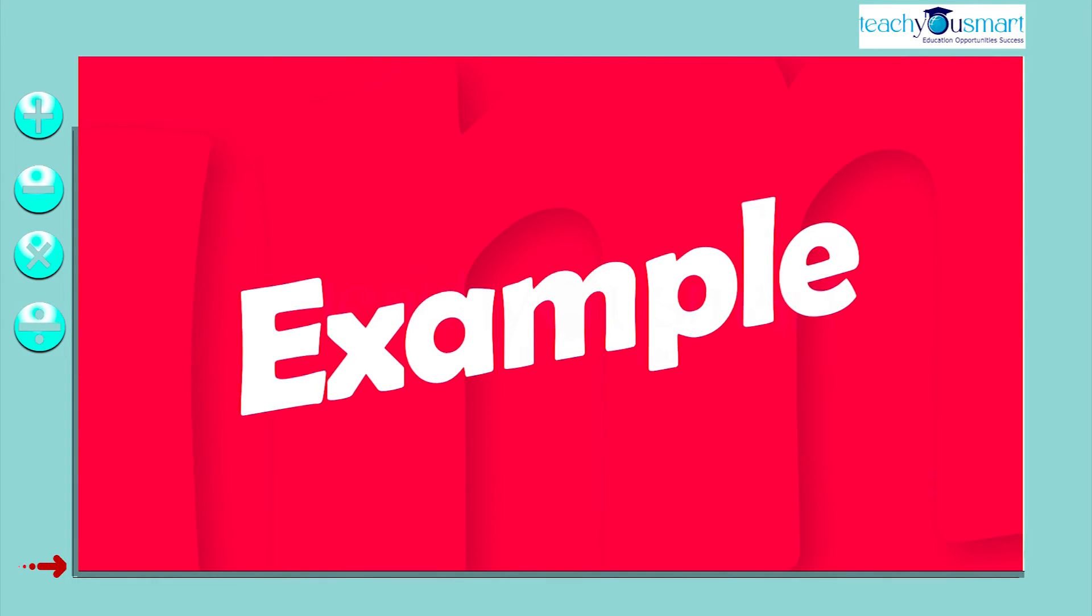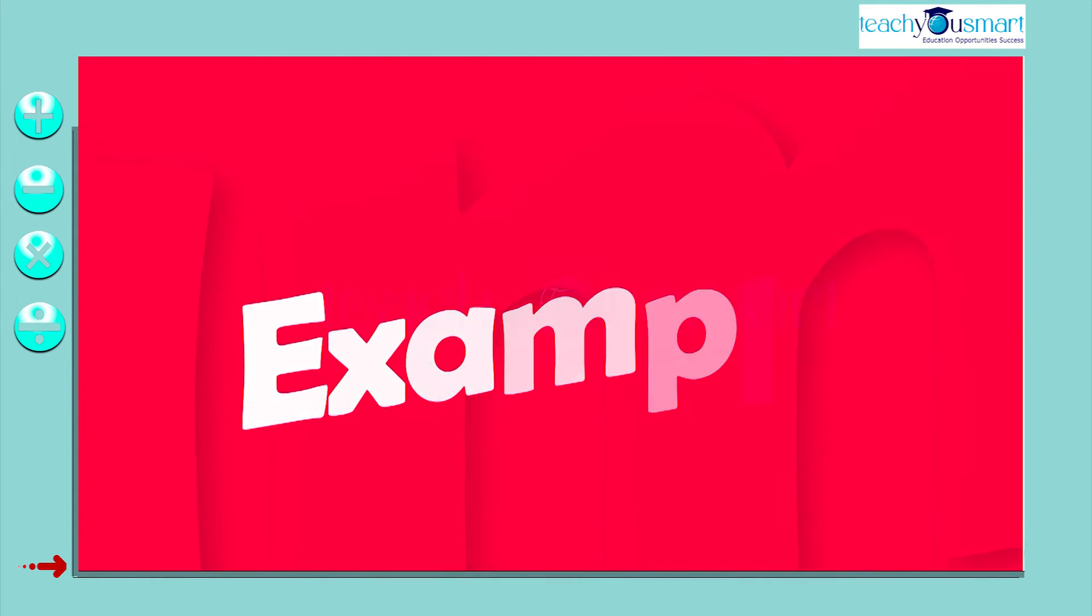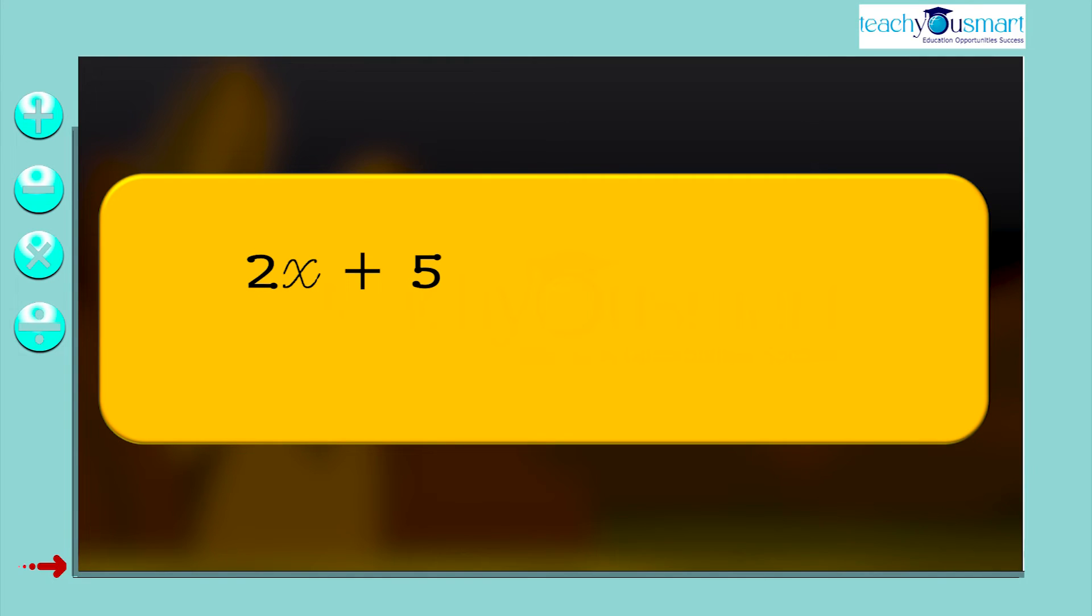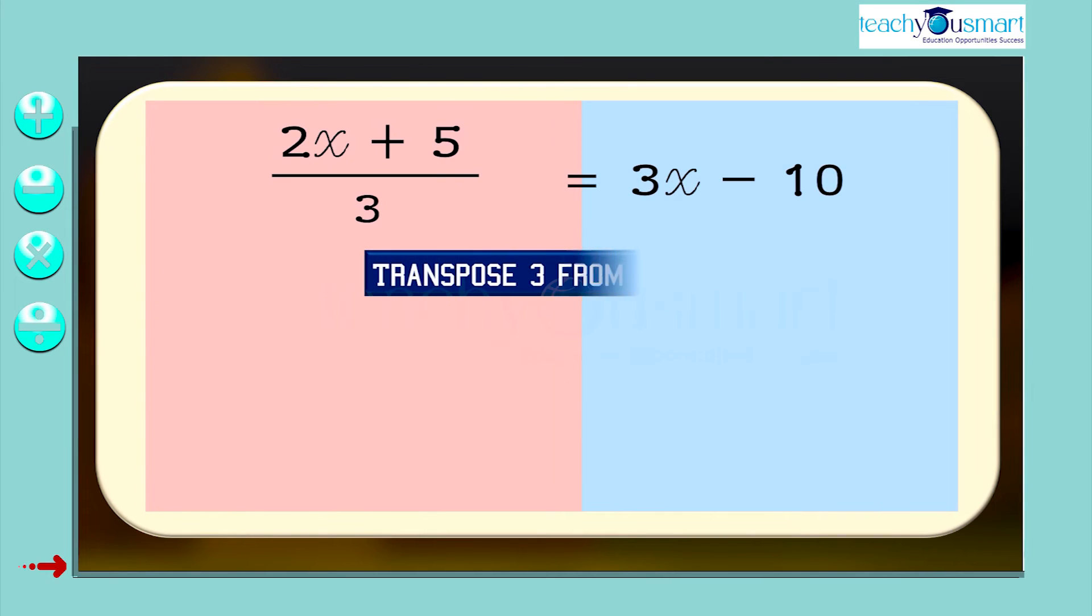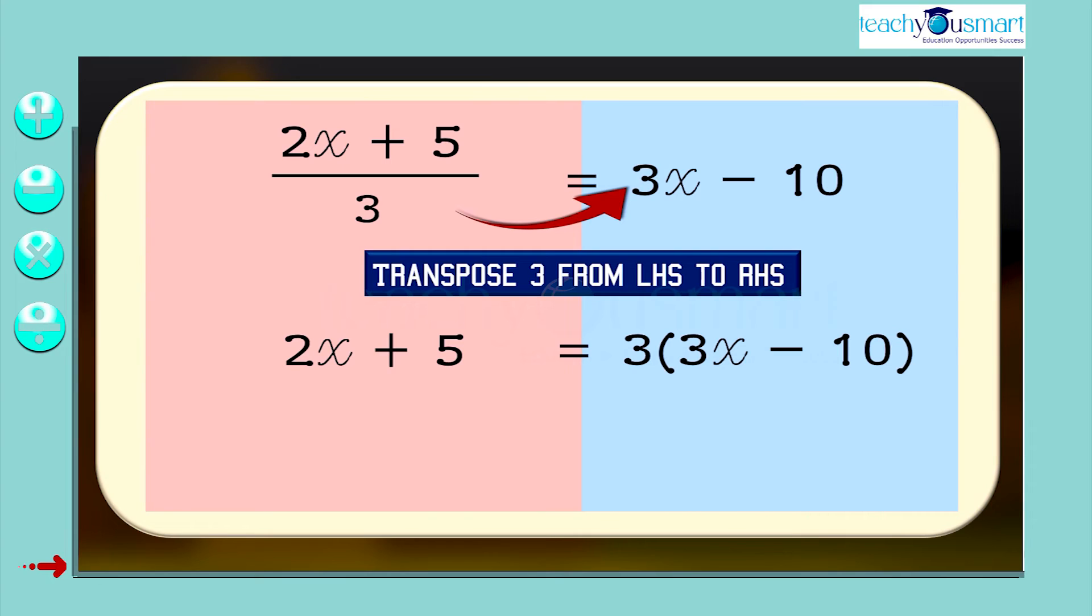Let's take another example. (2x + 5)/3 = 3x - 10. We need to reduce this equation to a simpler form. For that, first transpose the 3 from LHS to RHS. We get 2x + 5 = 3 × (3x - 10).